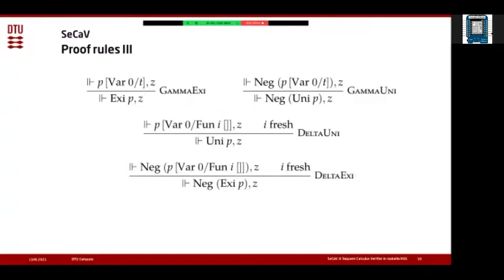Finally we have gamma and delta rules for quantified formulas. For gamma rules we have the existential quantifier and the negated universal quantifier. Here we must substitute the quantified variable by some term t, and this can be any term. It's important to note that the substitution is not just syntactically substituting variable zero, because we use de Bruijn indices. What is variable zero at the outermost level may not be referred to by zero later when we encounter more quantifiers inside formula P. Whenever we pass a new quantifier we must increase the number we are substituting for t, and since we're removing a quantifier we also need to decrease all the other de Bruijn indices.